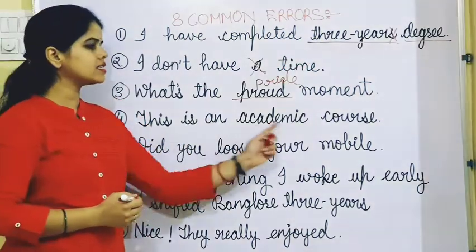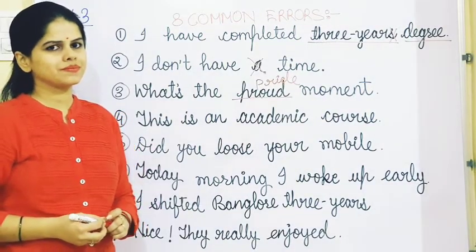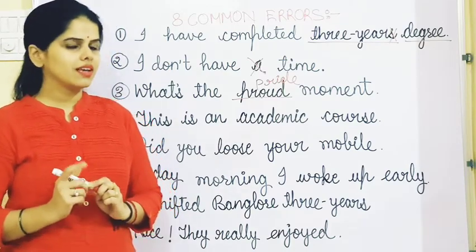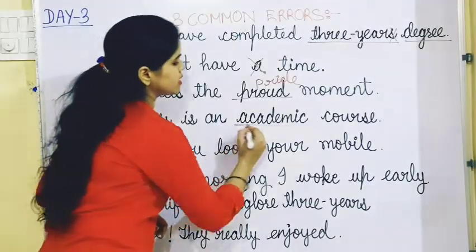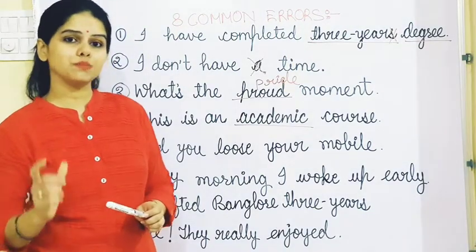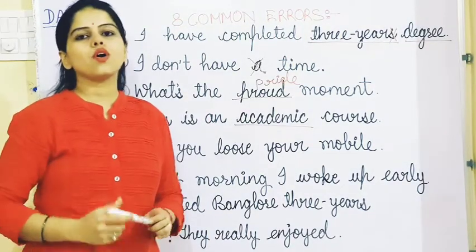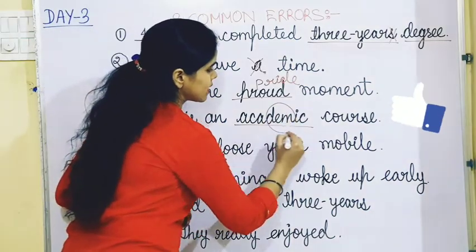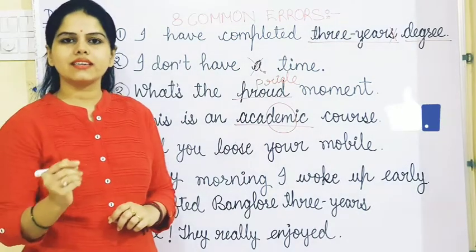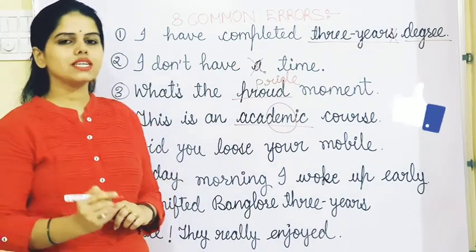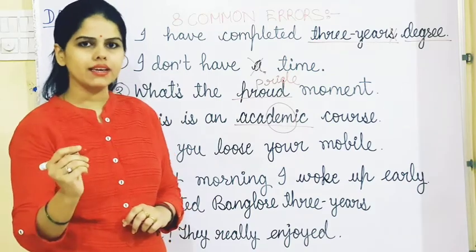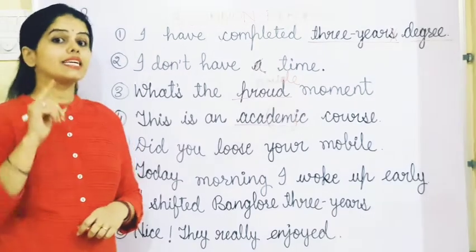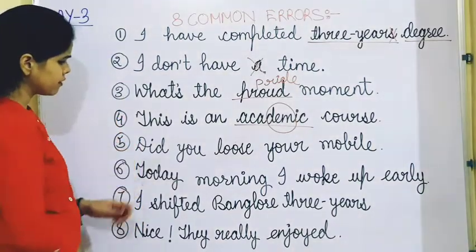The fourth error is: This is an academic course. The mistake here is mispronunciation of the word 'academic'. The wrong pronunciation is 'academic' — the correct pronunciation is 'academic'. So the correct sentence is: This is an academic course.